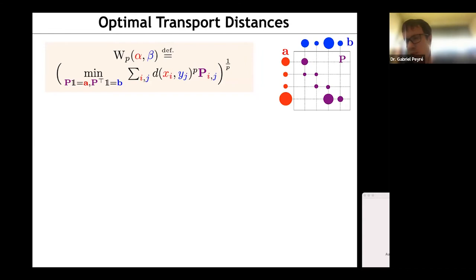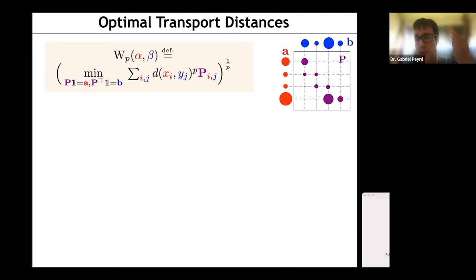There's more: not only is the transport plan P important, but the value of the optimization — taking the optimal P, computing the cost, and raising it to the power 1/p — defines a distance called the Wasserstein distance, also known as the Monge-Kantorovich distance or Earth Mover's distance. It is indeed a distance: it is zero if and only if alpha equals beta, and it satisfies the triangle inequality. The important point is that this distance is geometric — it carries a new way to compare probability distributions.